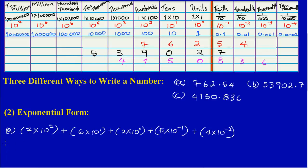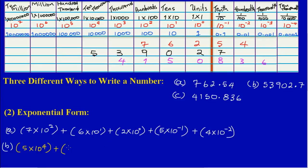Now quickly for part B — the number is 53,902.7. The 5 is located in the 10,000 column, and 10,000 is the same as 10 to the 4th power, so we would have (5 × 10⁴). The next digit is 3, and the 3 is in the 1,000 column, so we would have (3 × 10³).